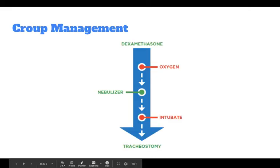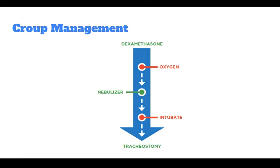As an additional example, croup management depends on the severity of the disease. Dexamethasone, a corticosteroid, can cause hypertension and reduce activation of lymphocytes.